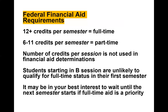Federal financial aid requirements: full-time students must take a minimum of 12 credits per semester; part-time is six to 11 credits. Military students on the GI Bill follow the same thresholds. Note that the number of credits per session is not used for funding determination — the entire semester is counted. For example, taking one class in Session A and one class in Session C for a total of six credits counts as your semester — you don't need six in A and six in B separately.